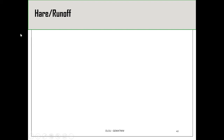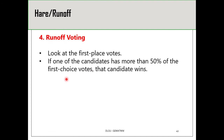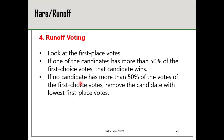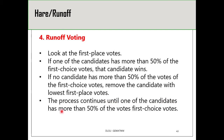The next voting method we will discuss is called the Hare or runoff method. In this method, the first step is we look at the first place votes. If there is a candidate that receives more than half of the first place votes, then that candidate is declared the winner. On the other hand, if no candidate receives more than half of the first place votes, we remove the candidate with the lowest first place votes and adjust the preferential table accordingly. The process continues until one candidate receives more than half of the first place votes.